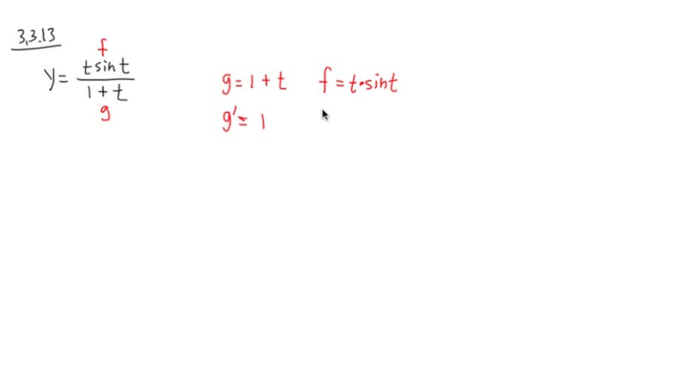But if you take a look at this, in order for us to figure out f prime, f is t times sine t. We actually have to use the product rule in here. So this question requires both the product rule and the quotient rule. So that's why it makes this question much harder than the other ones. But we can handle it.